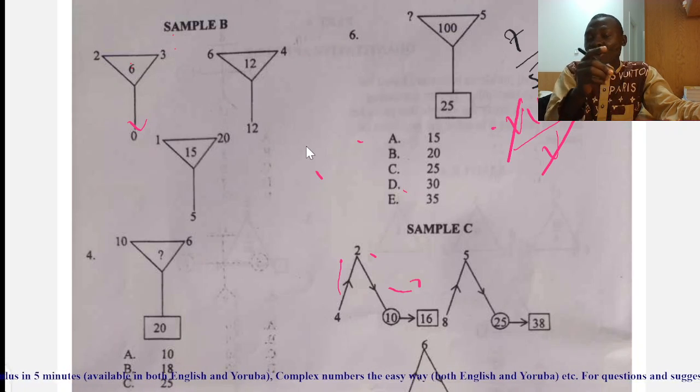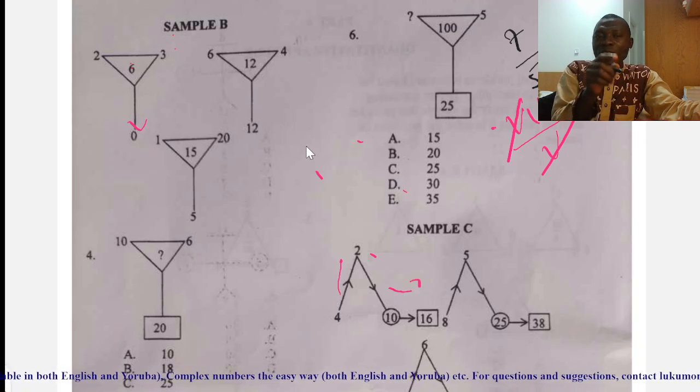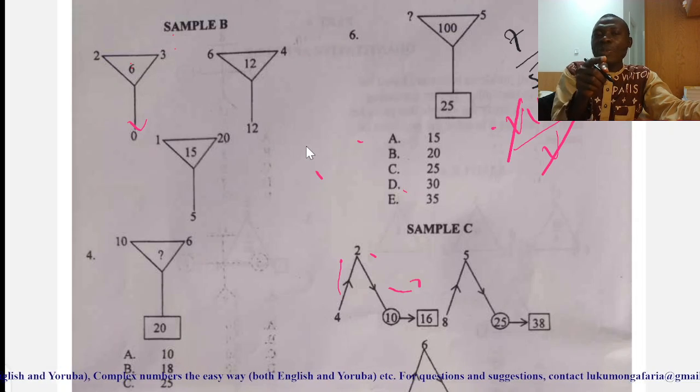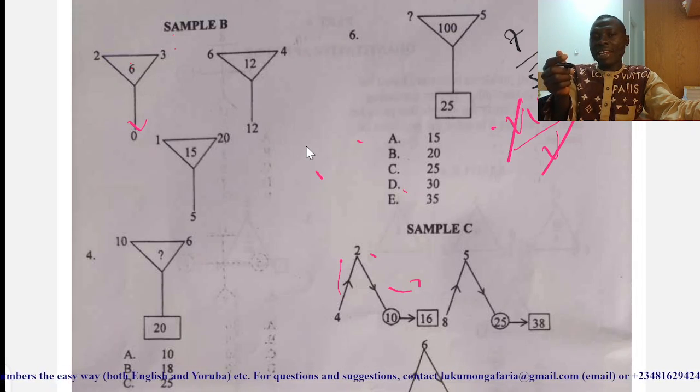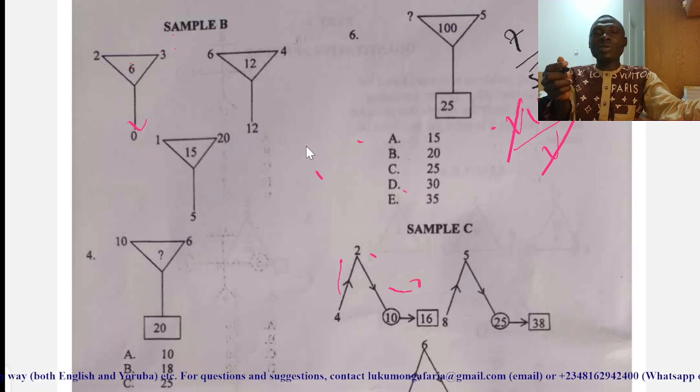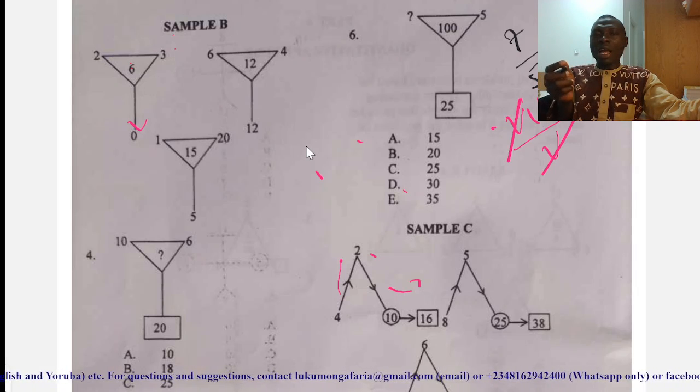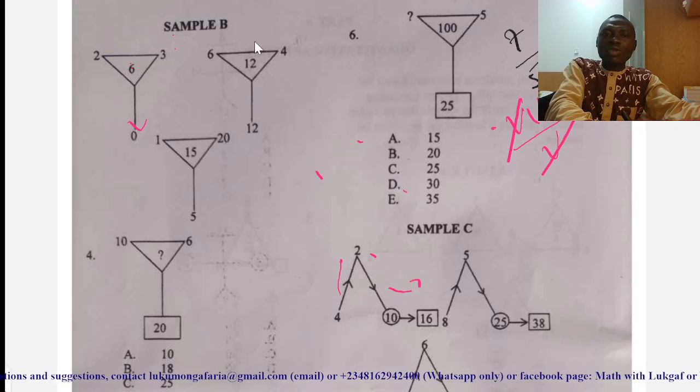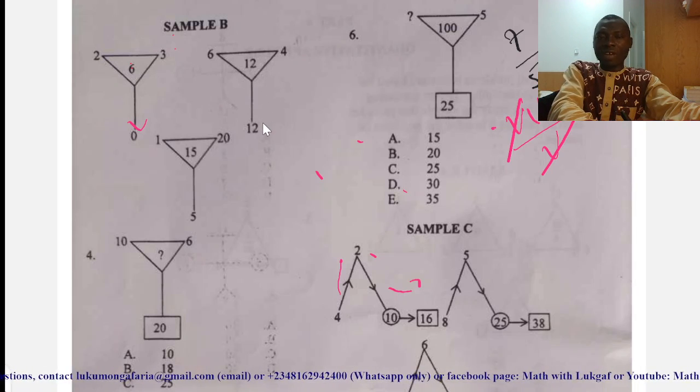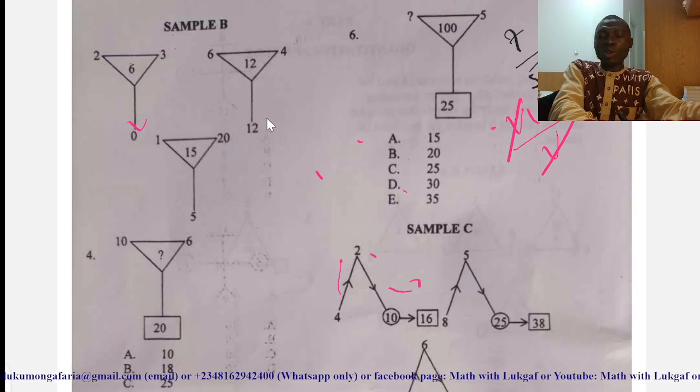Because if you say two times three, which is six, six minus six is zero, it might not work for the second one. Look at this second one. Six times four is 24. And 24 minus 12 will give me 12. I think that holds for that as well. But you must not stop there.